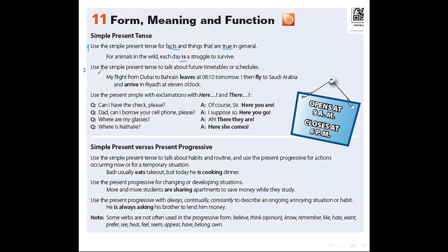The second use of the simple present tense is to talk about future timetable or schedule. For example, my flight from Dubai to Bahrain leaves at 8:10 tomorrow. I then fly to Saudi Arabia and arrive in Riyadh at 11 o'clock. Note that the verb here we add S to the base form. Why? Because this is the form of simple present. We add S to the base form if the subject is singular. But here we use infinitive form without any addition. Why? Because the subject is I, they or we or plural. Let's write these notes please.